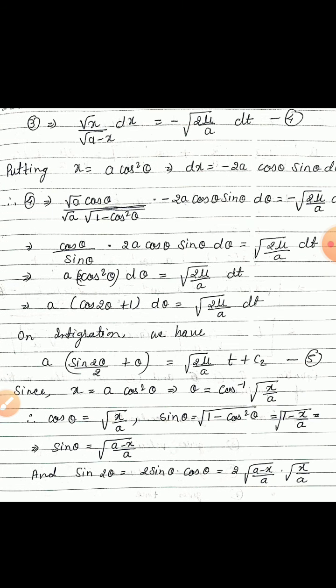Equation 3 can be rewritten as √x / √(a−x) dx = −√(2μ/a) dt, give it as equation 4. Now putting x = a cos²θ and differentiating, dx = −2a cosθ sinθ dθ. Substituting into equation 4, √(a cos²θ) / √(a(1 − cos²θ)) times (−2a cosθ sinθ dθ) equals −√(2μ/a) dt. After simplification, √a cancels, √(1 − cos²θ) is sinθ, and the negative signs cancel, giving 2a cosθ sinθ dθ = √(2μ/a) dt.